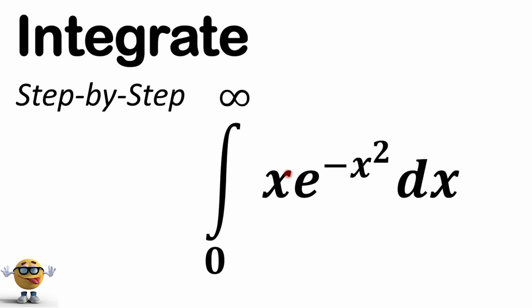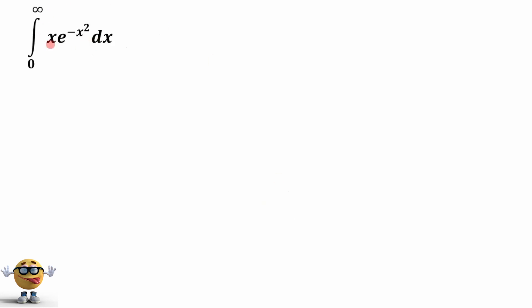My friend, we're going to evaluate this Gaussian function here, x times e to the negative x squared from 0 to infinity. It's going to be awesome. It's going to be short. Just note I got many modifications of this function if you want to see the integral of those as well.